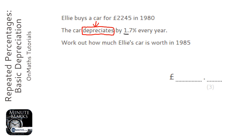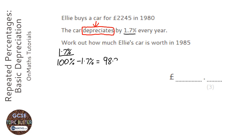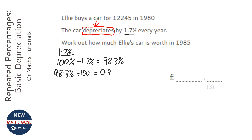It goes down by 1.7% each year. To work out the multiplier, you first start off with 100%. This time you take away 1.7% because it's going down, so 100 minus 1.7 is 98.3%. Then to get the multiplier, you divide by 100, giving you 0.983.